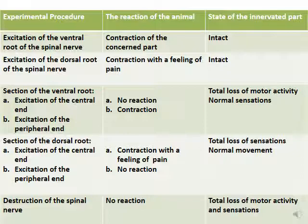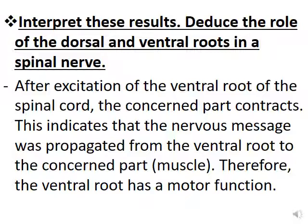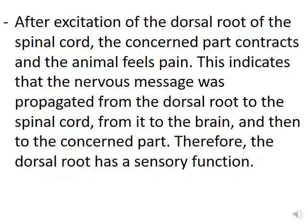After destruction of the spinal nerve, there is no reaction and total loss of motor activity and sensation, indicating the spinal nerve has both motor and sensory functions. In summary: the ventral root has a motor function, the dorsal root has a sensory function. The nervous message propagates in a centrifugal manner in the motor ventral root and in a centripetal manner in the sensory dorsal root.